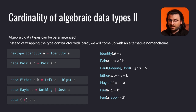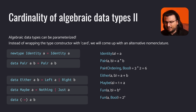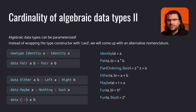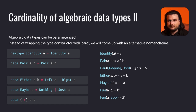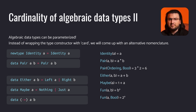Here are two more examples. Consider the maybe data type. If we construct it with the just data constructor, its cardinality will depend on the cardinality of type parameter a. Nothing is a nullary constructor, and there's only one way to construct a term of type maybe a with nothing — just pass nothing. Therefore, the cardinality of maybe a, since it's a sum type, is a plus one.